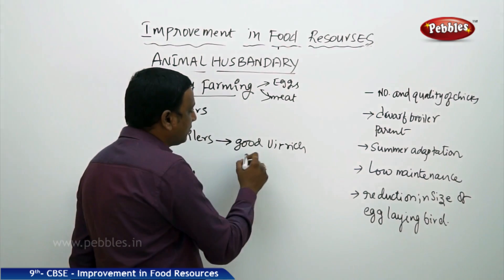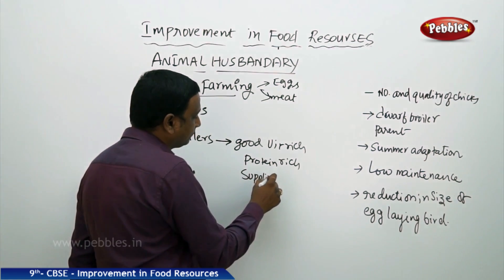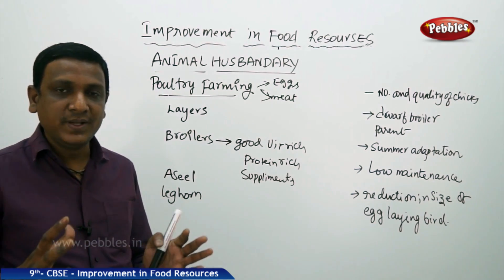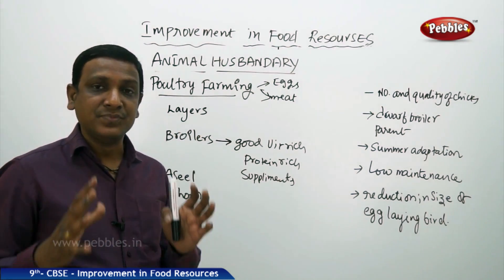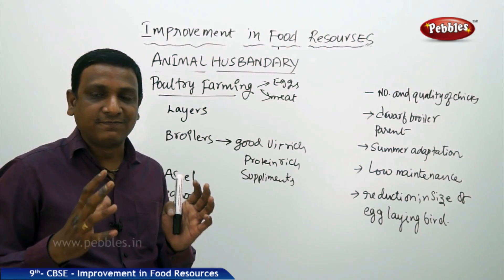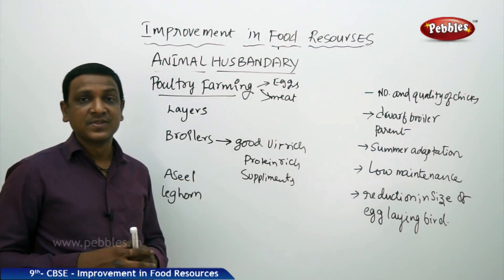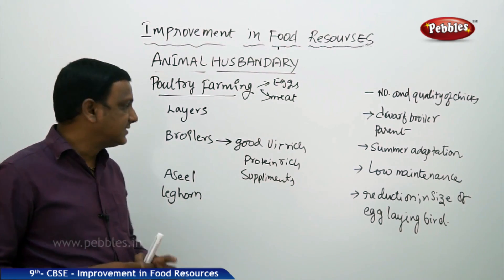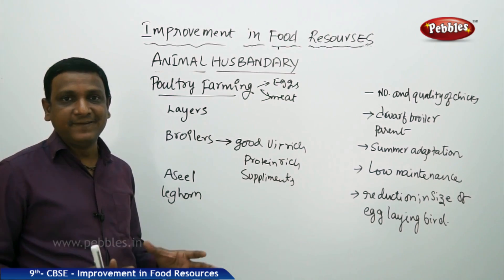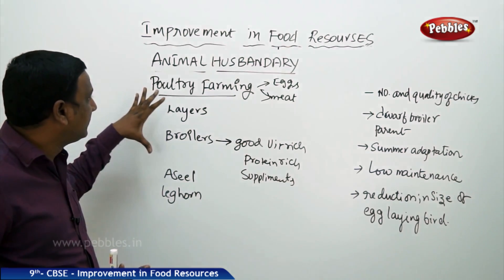Vitamin-rich and protein-rich supplements are given to broilers. Broilers should grow healthily, look healthy, have good feathers, grow quickly, and have a proper amount of fat in their bodies, because they are sent to markets for meat production. That is the reason they are given vitamin-rich and protein-rich supplements — their feed is mixed with more protein.